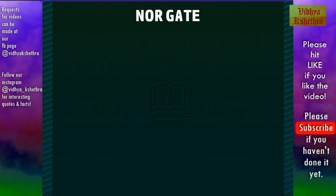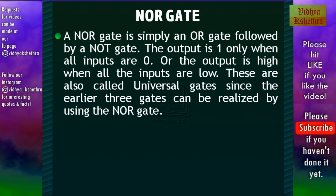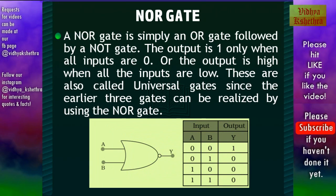The NOR gate is a combination of an OR gate and a NOT gate. The output is 1 only when all inputs are 0, or the output is high when all the inputs are low. These are also called universal gates like the NAND gate, since the earlier 3 gates can be realized by using the NOR gate. The symbol and the truth table are as shown in the figure.